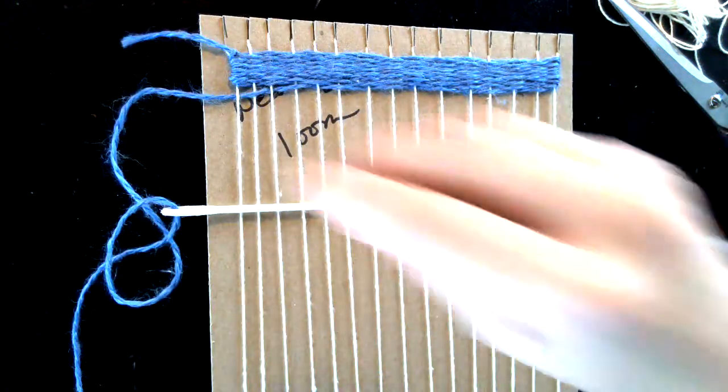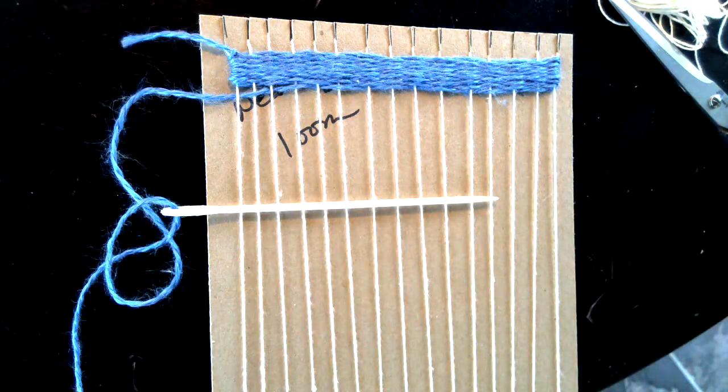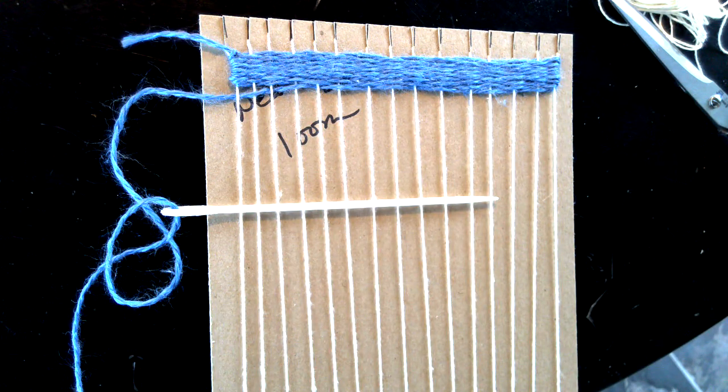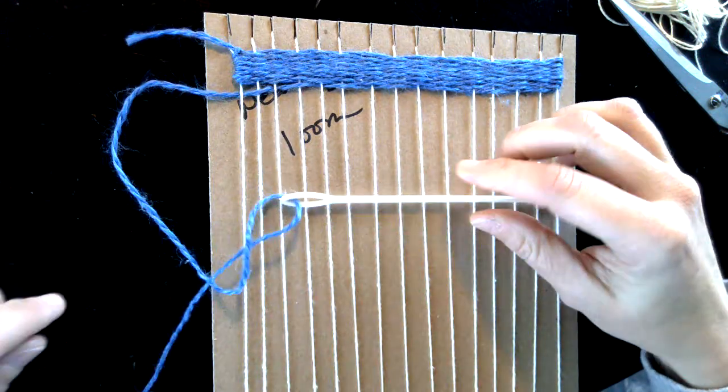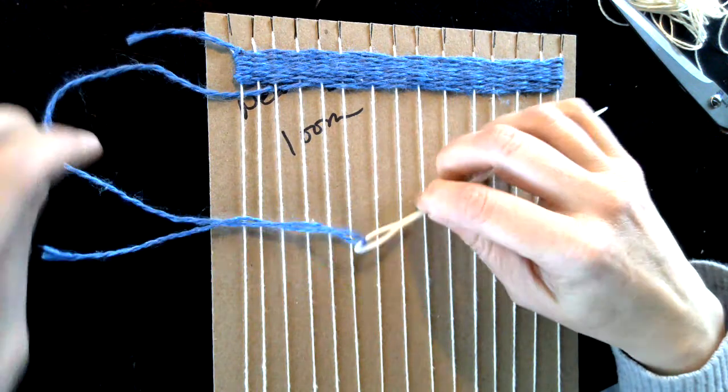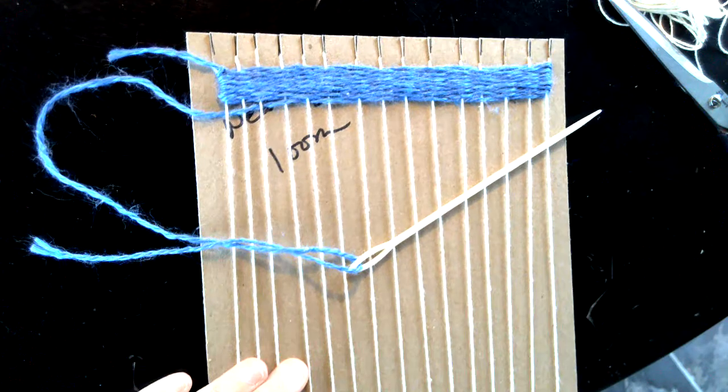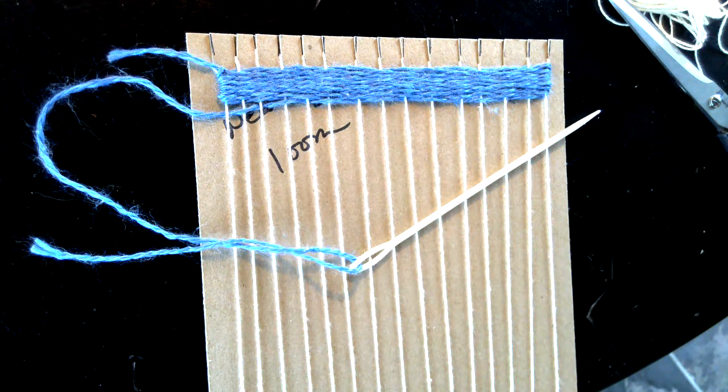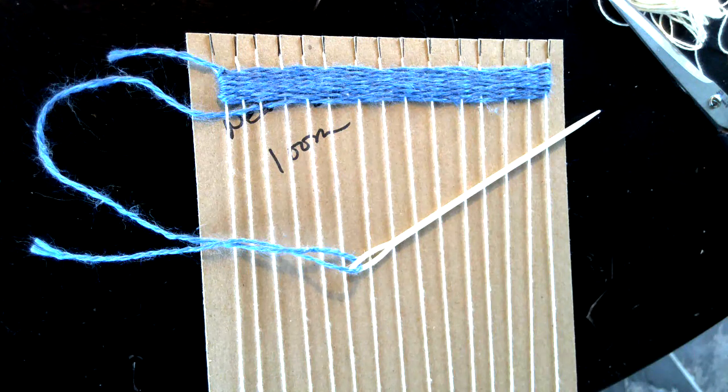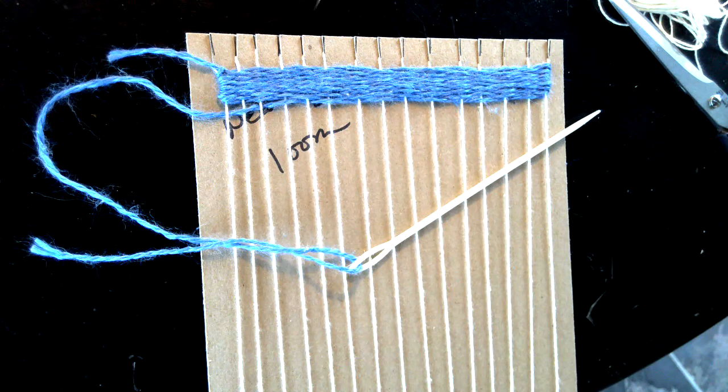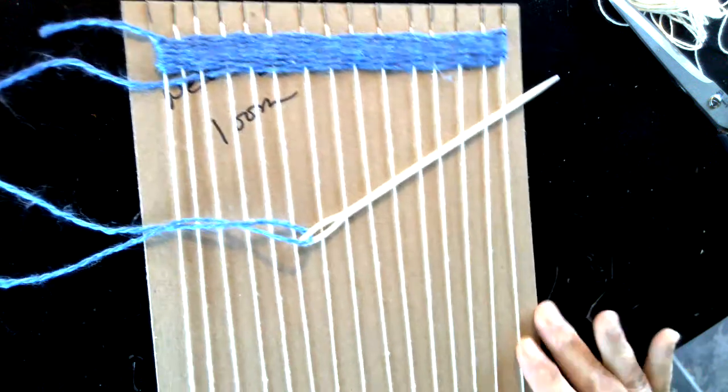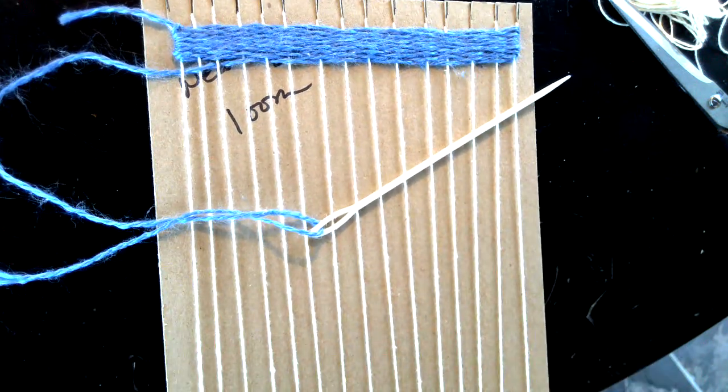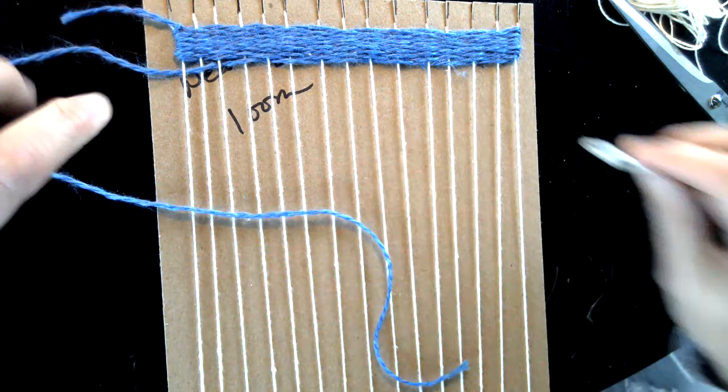Alright, so I'm going to show you how to end a row when you've come to the end of the yarn that you're using, and then also how to incorporate your other materials. This is called a mixed media weaving, which just means that you're using stuff other than yarn. Mixed media just means that you're using a lot of different materials and mixing them up.